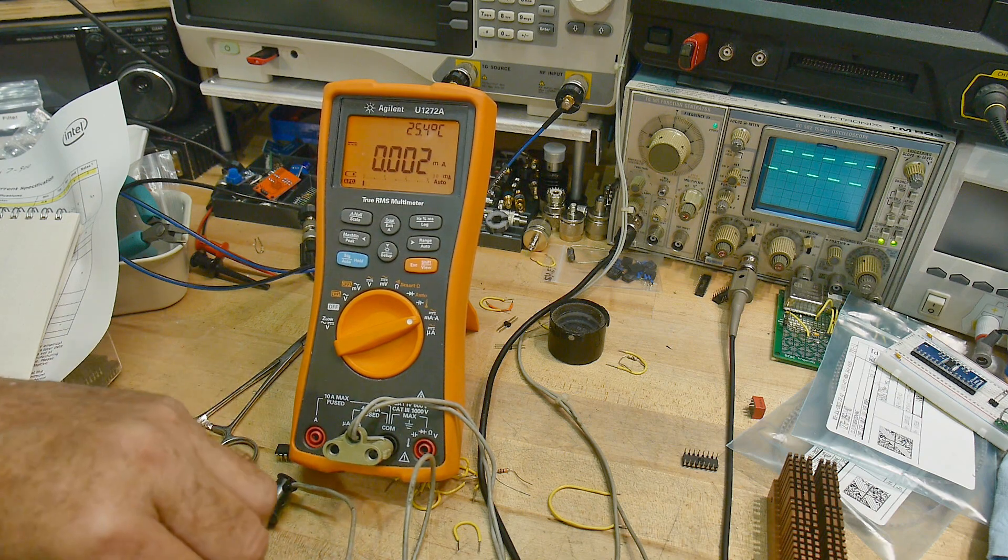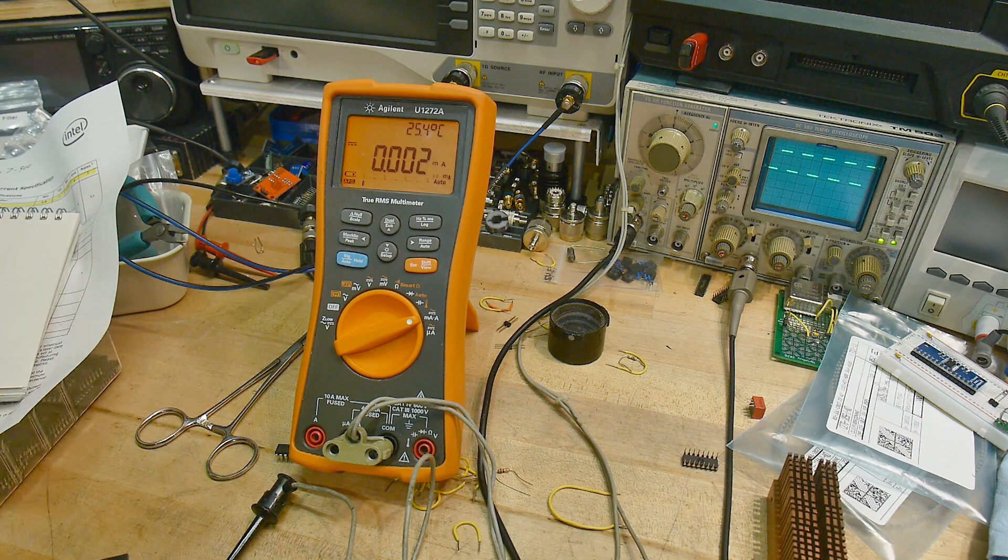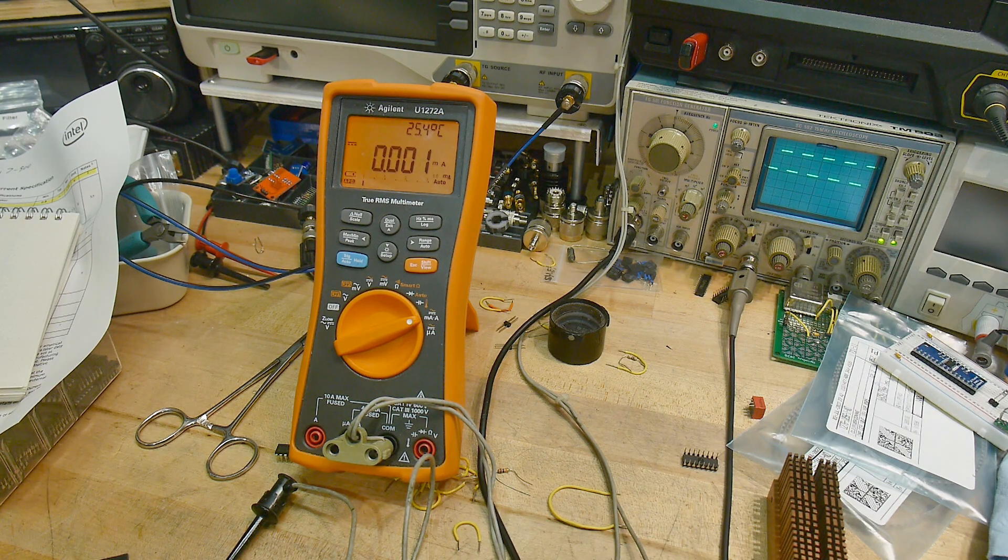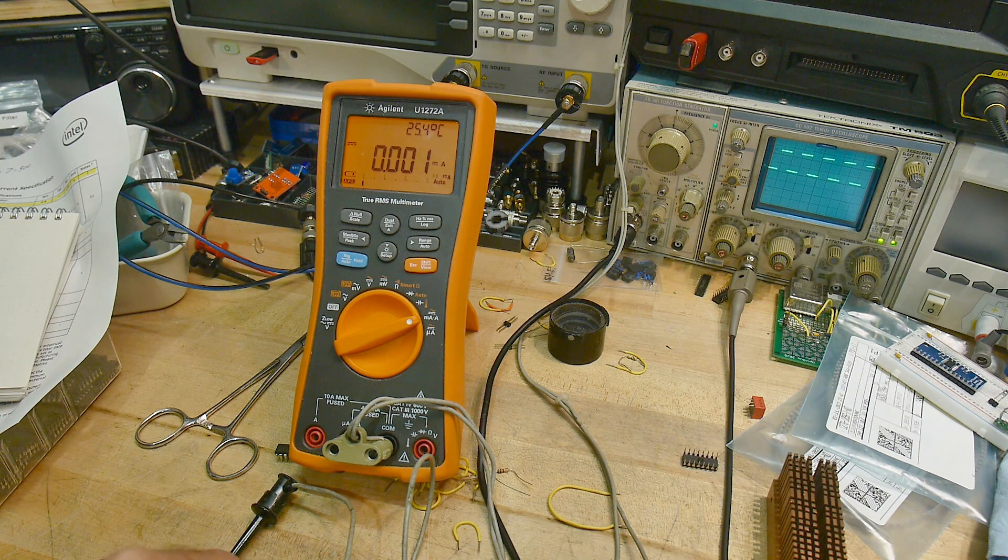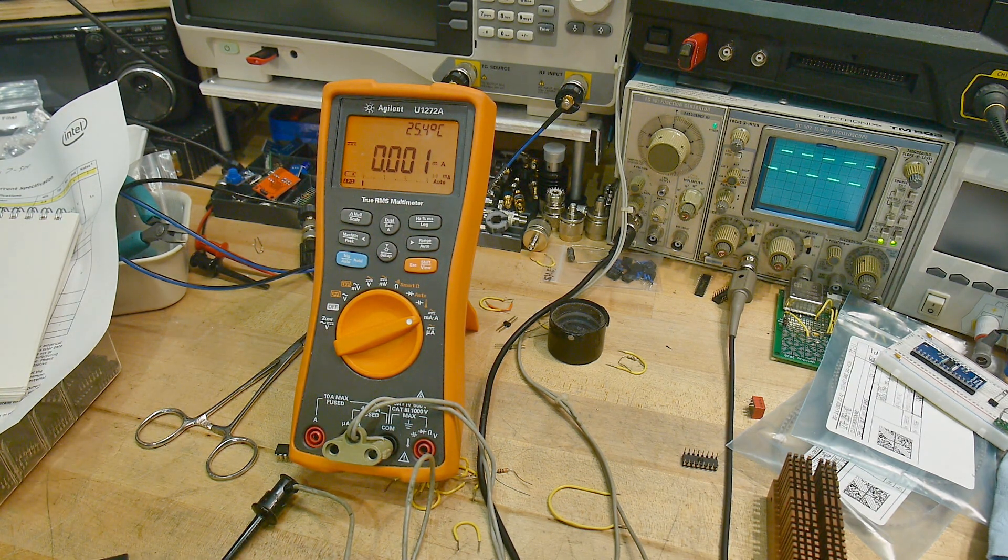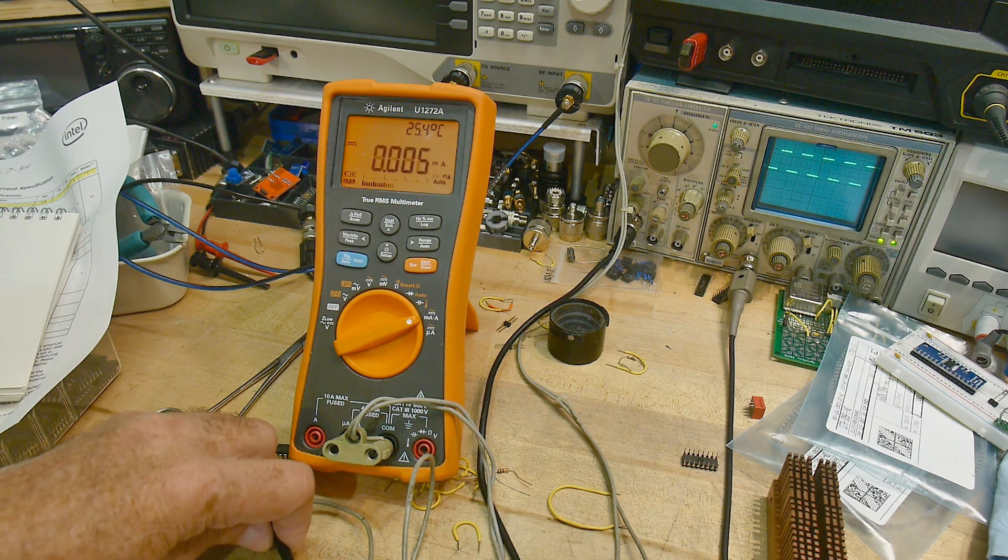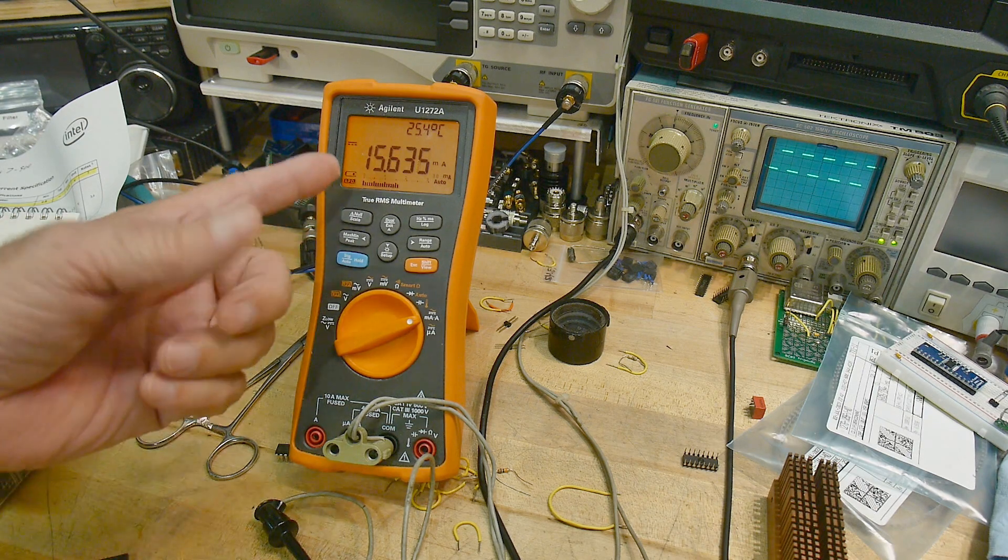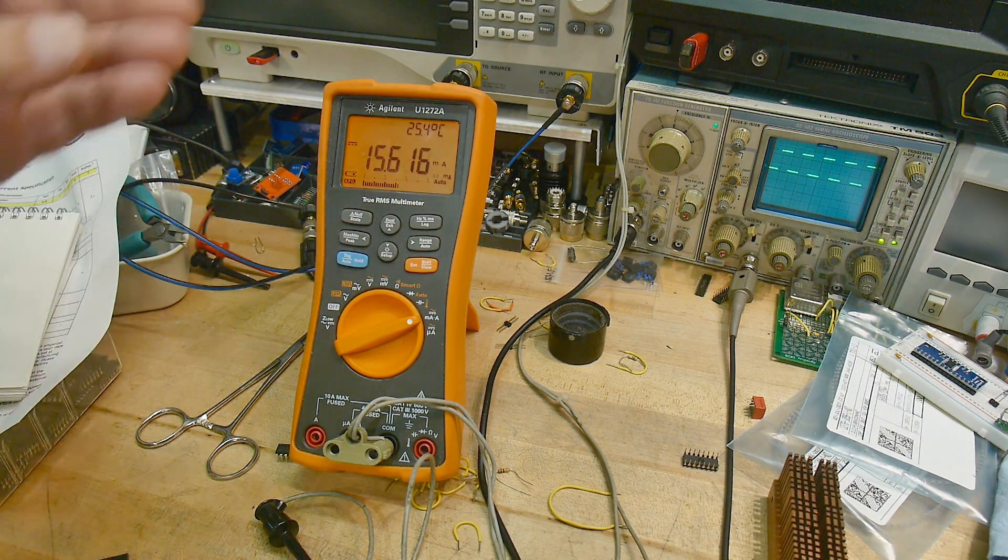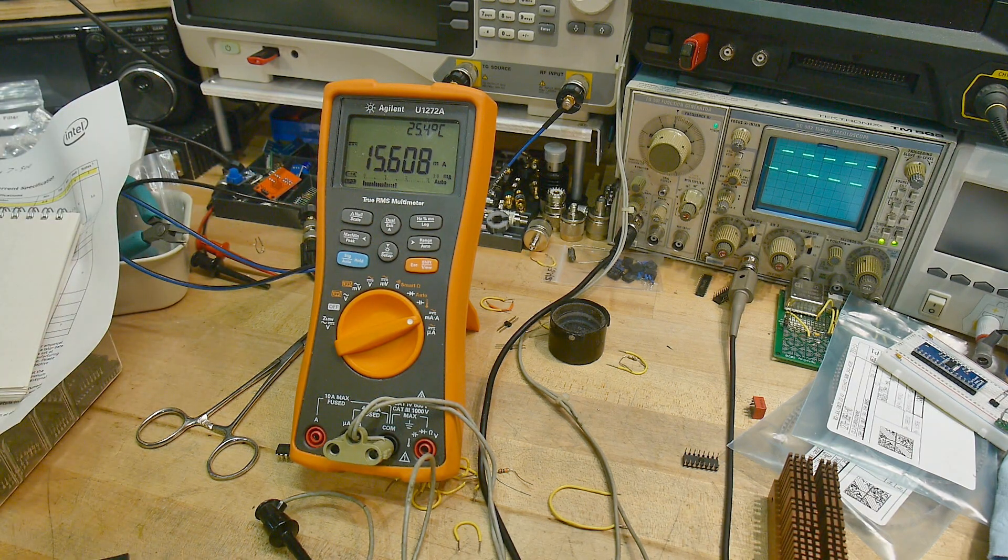So let's go back to the CMOS world. And just for fun, let's put in a 7404. That's not even the LS version. This is just 7404. This is like from the way back days. Let's put him in and see how much he draws. 15 milliamps. Yeah. So we went from 15 milliamps to three milliamps to basically nothing.